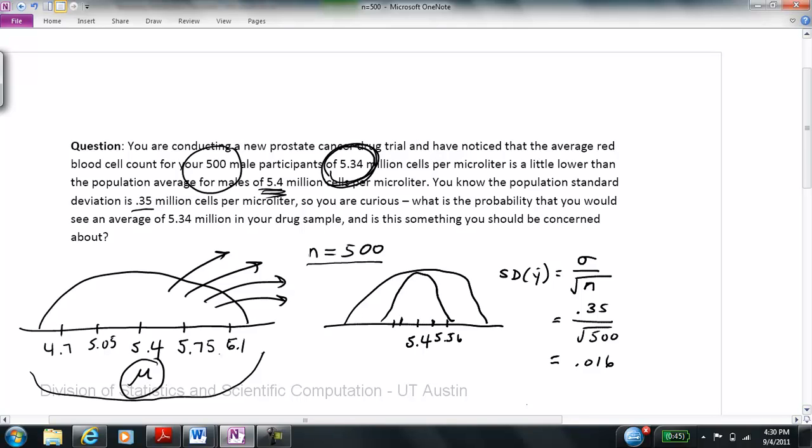So, if this is the case, what is the likelihood I would see 5.34 million cells per microliter? If, in fact, the true population mean for our sample of men, again, that is men who have received this cancer drug trial, if I see an average for them of 5.34, what is the likelihood that that is just noise, that really the drug has not reduced blood cells from 5.4 being the average? Well, let's take a look.